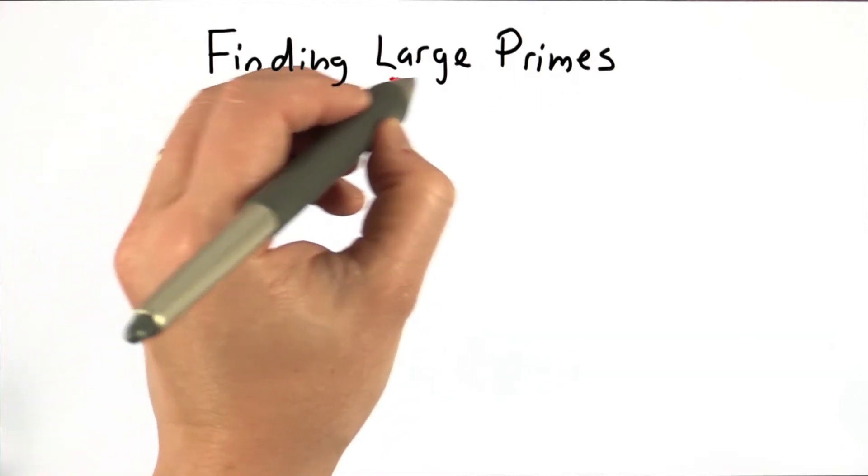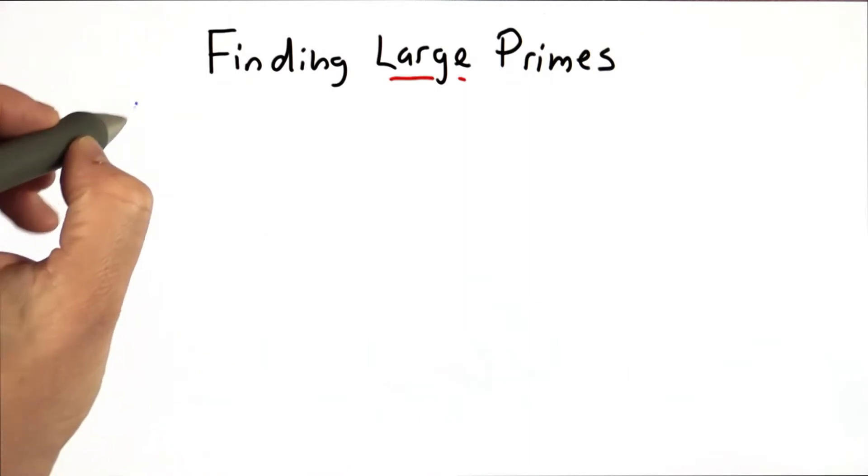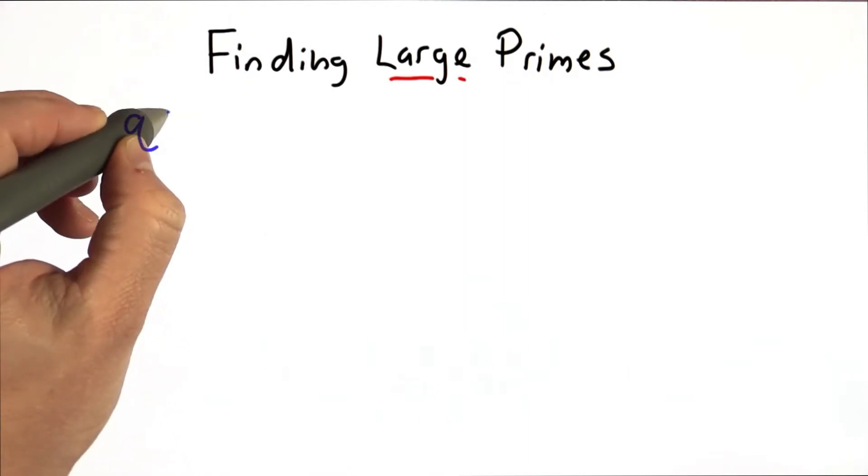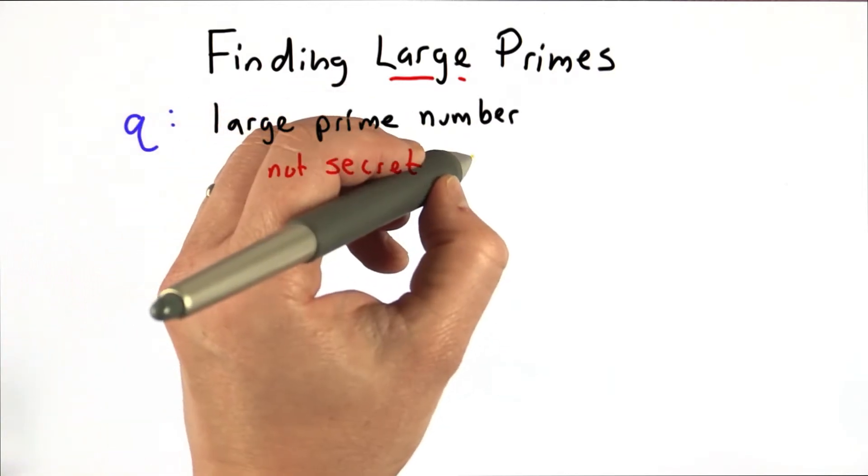The next issue in implementing Diffie-Hellman that I want to talk about is this problem of finding a large prime. The protocol assumes that we can start with this value q, which is the large prime number. It doesn't have to be kept secret, but it should be different.